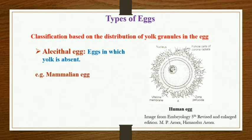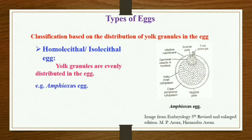Let's move on to the next type, which is the homolecithal or isolecithal egg. The eggs in which the yolk granules are evenly distributed throughout the egg are referred to as homolecithal or isolecithal eggs. You will not find any area having more or less amount of yolk granules.